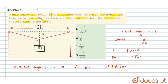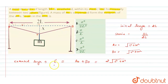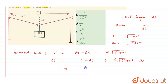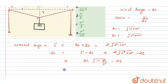Now we calculate the change in length ΔL, which is L' minus the initial length 2L. Substituting: ΔL = 2√(L² + x²) − 2L. Taking 2L common: ΔL = 2L[√(1 + x²/L²) − 1]. Since x is much smaller than L, we apply the binomial expansion: √(1 + x²/L²) ≈ 1 + x²/(2L²).